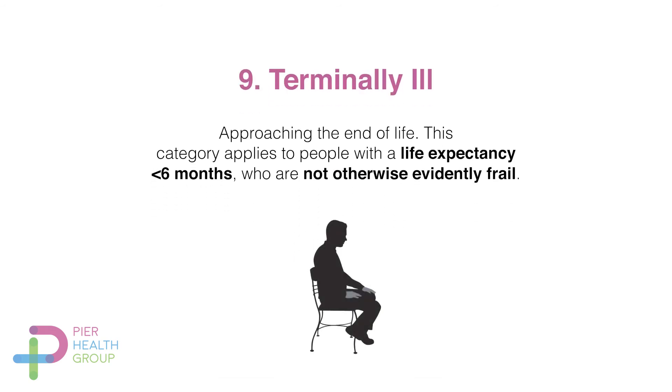Number nine is classified as those residents who are terminally ill and have been told they have less than six months to live. For this group we really need to think about their future care and what their wishes would be for those last few months that they are with us.